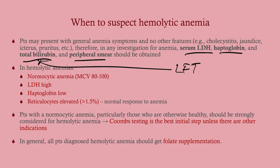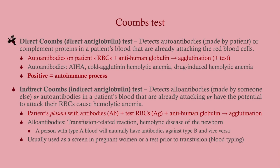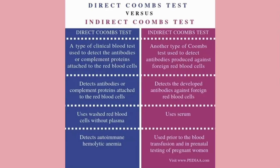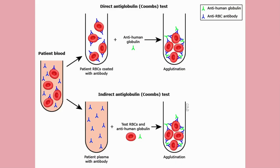The best initial step after routine labs is Coombs testing. The direct Coombs test tells you if you're dealing with an autoimmune hemolytic anemia. Also, all patients with hemolytic anemia need folate supplementation because you're making new red blood cells and folate is one of the key ingredients. For Step 1, know the mechanism; for Step 2 and 3, just know that a positive Coombs test means autoimmune.